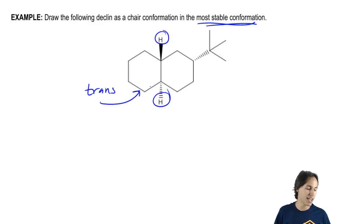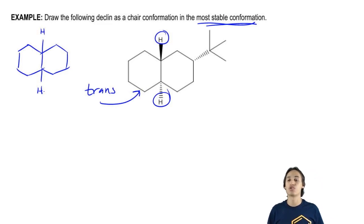But let's say that I had instead given you another decalin that looked like this and it just had sticks for H's. Then which way should I draw it? Should I draw it cis or should I draw it trans? And the answer is that I should still draw it trans.